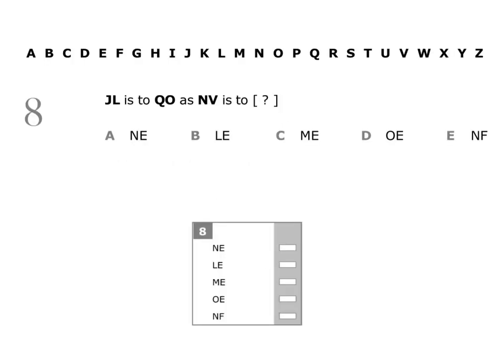Question eight: JL is to QO as NV is to what? We need to find the letters that complete the sentence in the best way. We'll start by looking at the letters J and Q.